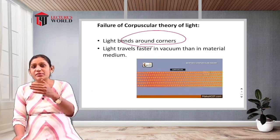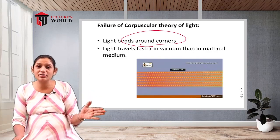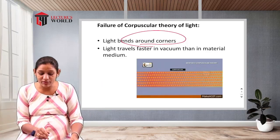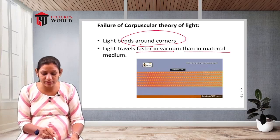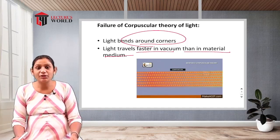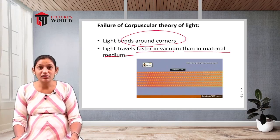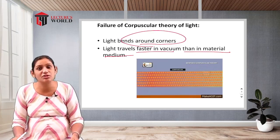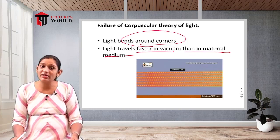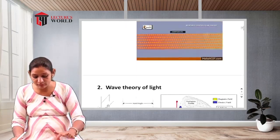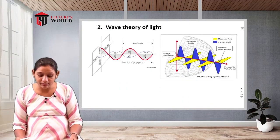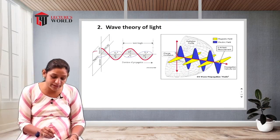Another reason for the failure of the corpuscular theory is that light travels faster in vacuum than in a material medium. Light travels very fast in vacuum and air rather than through solid or other materials. This could not be accounted for by the corpuscular theory.